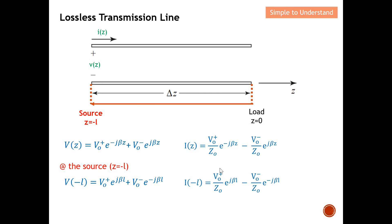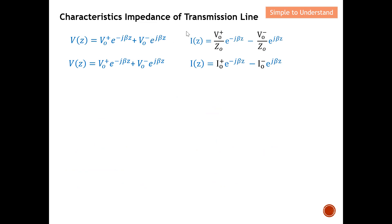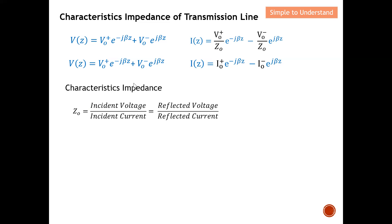Now let's find the characteristic impedance. I'll rewrite the equations so that the incident wave component is denoted I-plus-naught and the reflected wave component is I-minus-naught, to make the discussion easier. The characteristic impedance is defined as voltage divided by current. From the equations, we can identify the incident and reflected components, and the characteristic impedance can be found using incident voltage over incident current, or equivalently reflected voltage over reflected current.